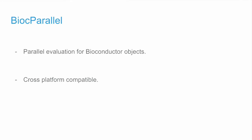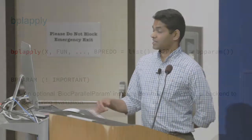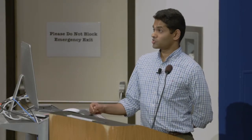It follows the same interface as LApply. It's called BPLApply. And you give it a vector x, a function, and the most important thing here is this argument called BP param, which essentially determines the backend you want to use for your parallel evaluation.